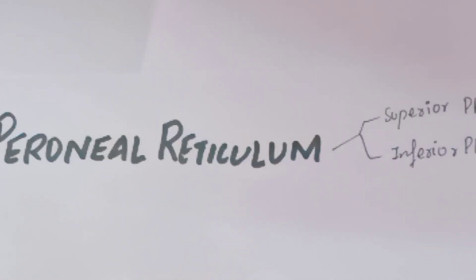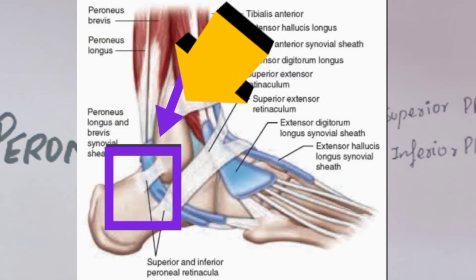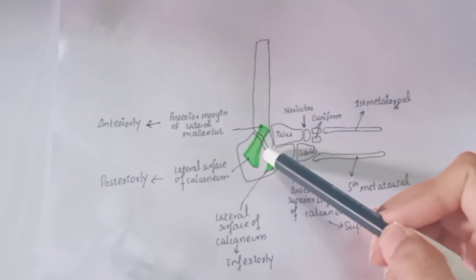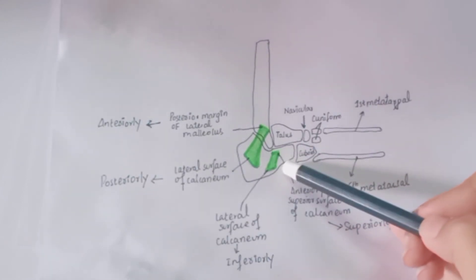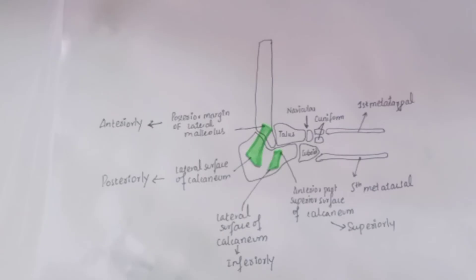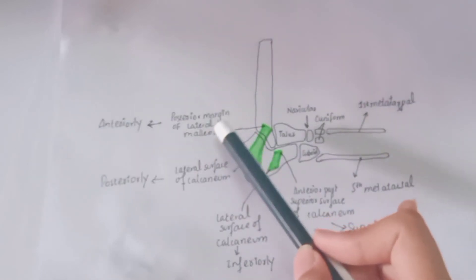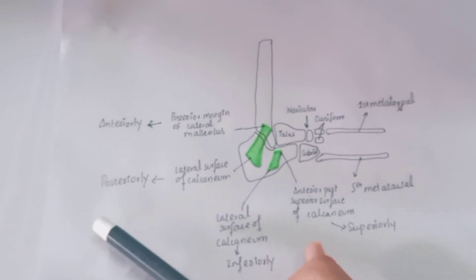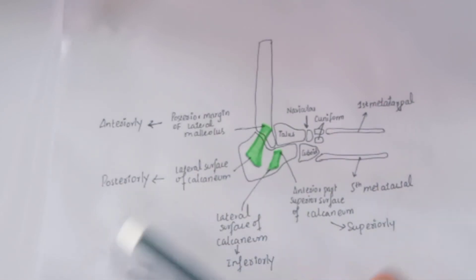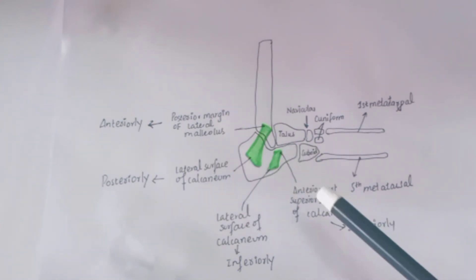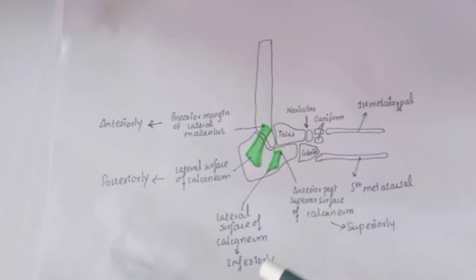The peroneal retinaculum of the leg includes the superior peroneal retinaculum and the inferior peroneal retinaculum. Both are located on the lateral side of the ankle joint. The superior peroneal retinaculum is attached anteriorly to the posterior margin of the lateral malleolus and posteriorly to the lateral surface of the calcaneum. The inferior peroneal retinaculum is attached superiorly to the anterior part of the superior surface of the calcaneum and inferiorly to the lateral surface of the calcaneum.